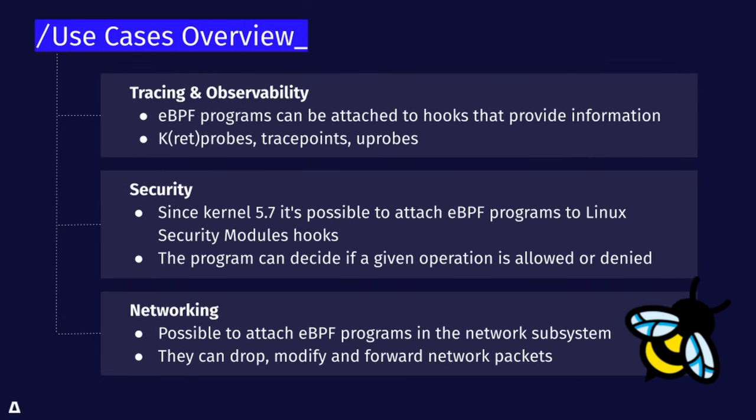Covering some of the use cases more in depth: tracing and observability really fits the functionality that eBPF provides. Often you want to be able to dynamically look into something, extract the information you want, and do that in a performant way that doesn't affect overall system performance. You want to get information at different levels of the system, and eBPF allows you to get that at a very low level. It's super performant and allows you to attach to different things.